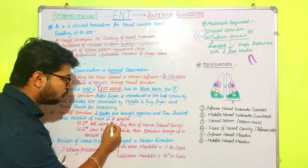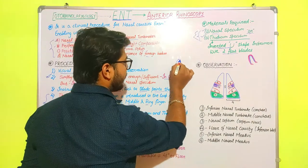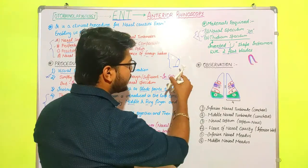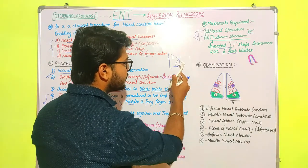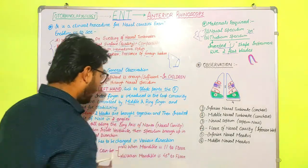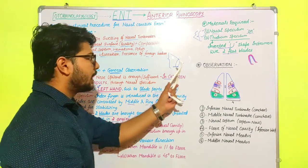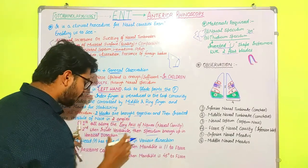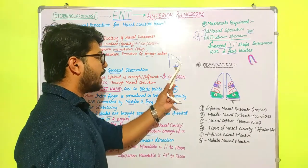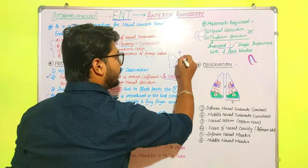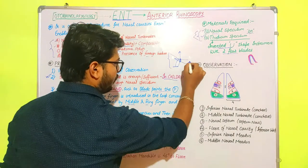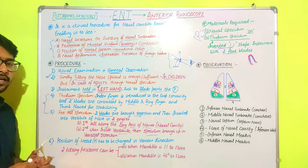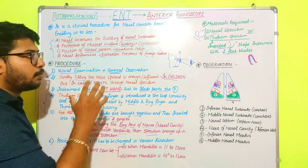The insertion involves two angles. First, the blades are inserted along the long axis of the nose into the vestibule. Once inside, the speculum is brought up in the vertical direction and opened, providing a wider view. Think of it as: insert along the long axis, then rotate upward vertically so the examiner can look through in a clear manner.